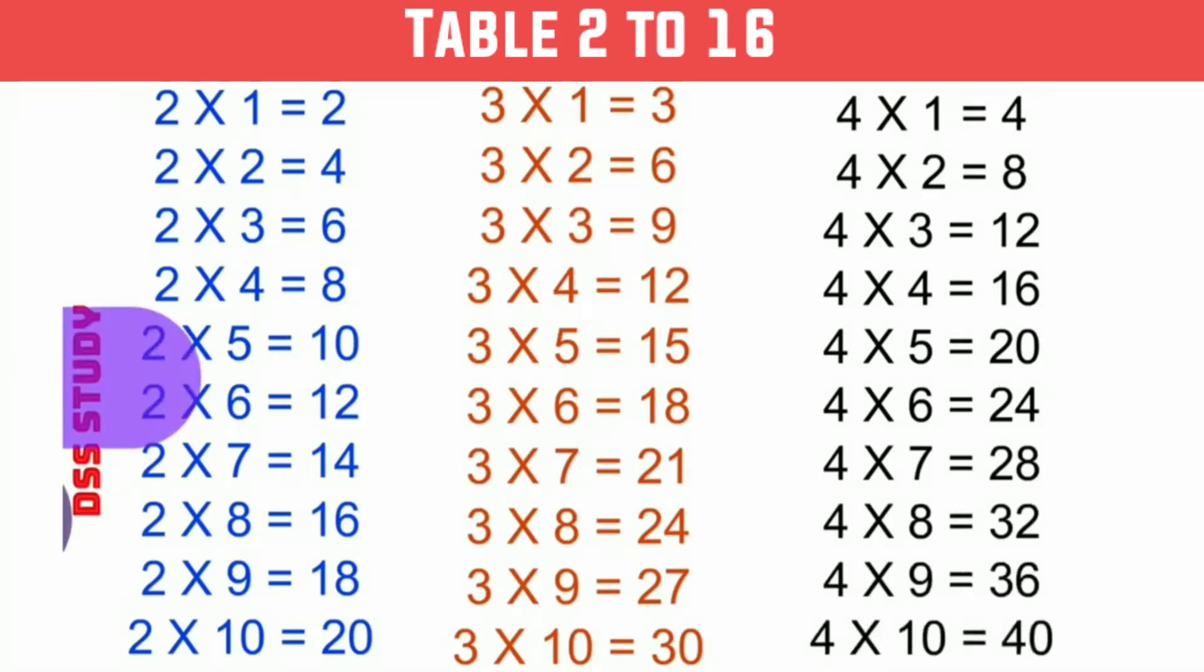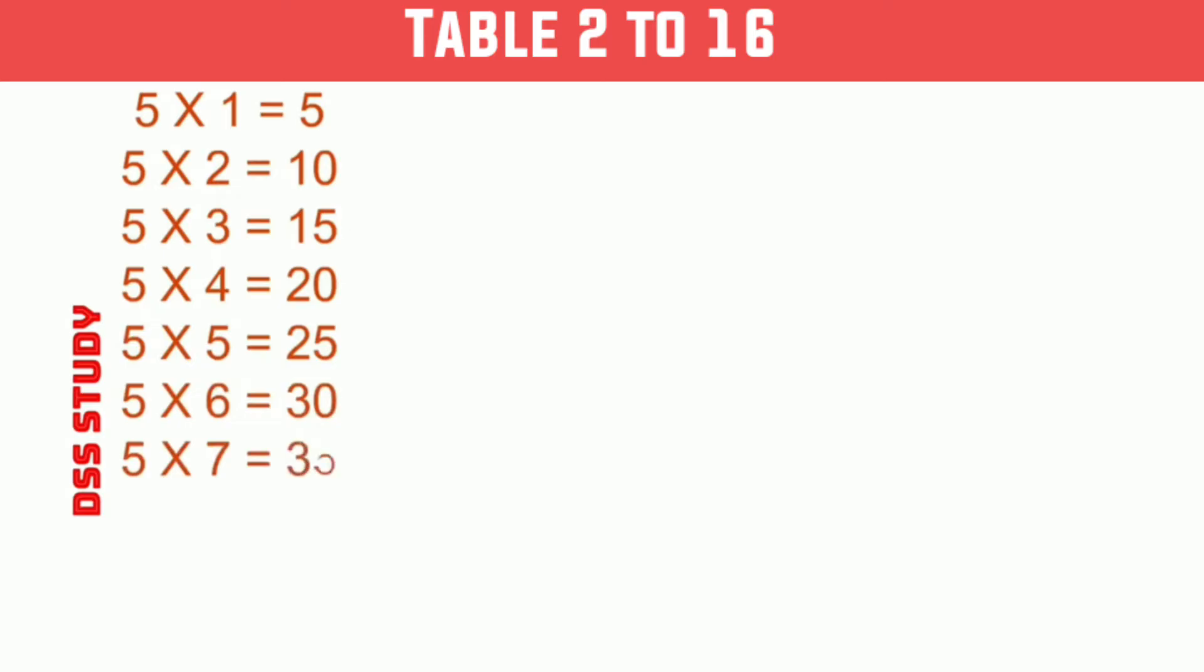5 times 1 is 5, 5 times 2 is 10, 5 times 3 is 15, 5 times 4 is 20, 5 times 5 is 25, 5 times 6 is 30, 5 times 7 is 35, 5 times 8 is 40, 5 times 9 is 45, 5 times 10 is 50.